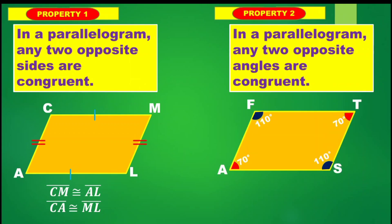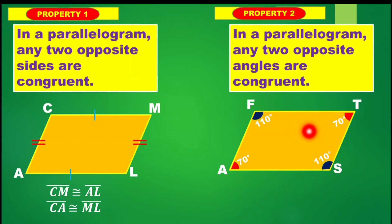For parallelogram FAST, we have that angle F is congruent to angle S, since they are the opposite angles. Same thing with angle A, which is 70 degrees, and angle T, which is also 70 degrees.